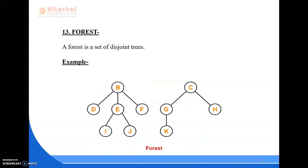Last term is forest. A forest is a set of disjoint trees. For example, a tree with root node B and a tree with root node C are two different tree data structures. When we make a set of two or more such disjoint trees, that makes a forest.